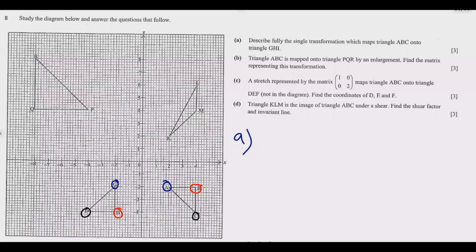The next question is: is it translation or rotation? To determine this, we join the corresponding vertices with straight lines. If these lines are moving parallel to each other, then it's a translation — but they are not parallel. So translation is out; it is a rotation.